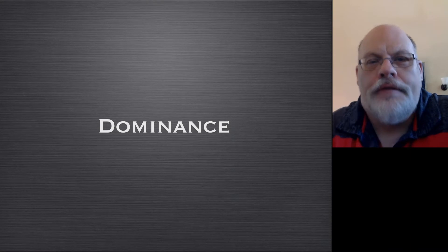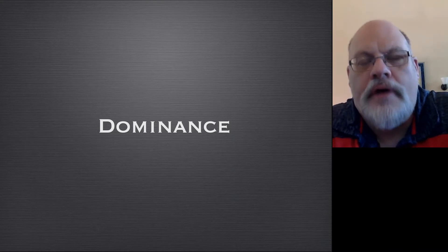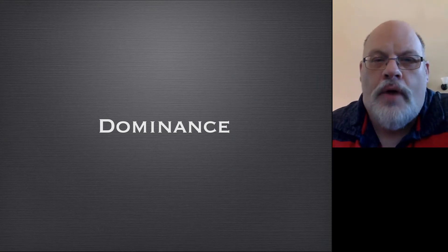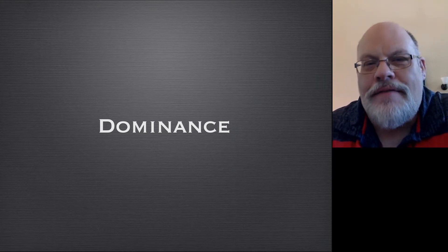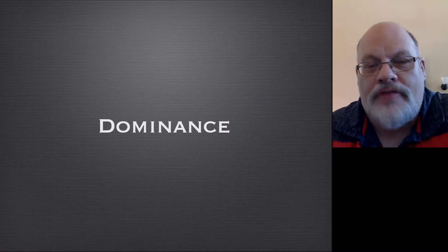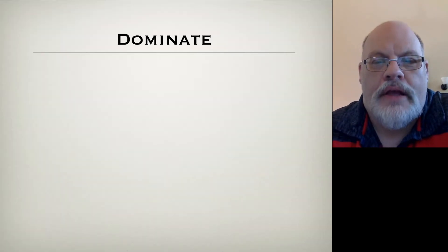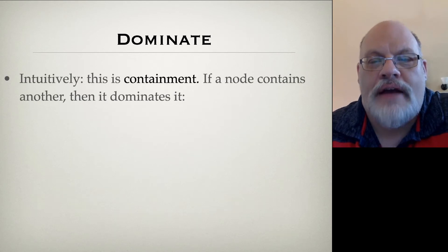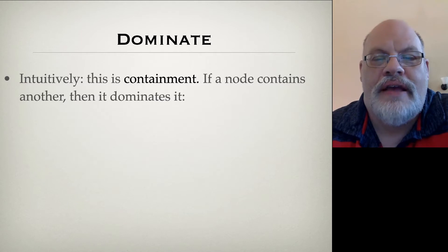The first relation we're going to talk about is called dominance. This is the up-down relationship in trees. It's the one that's connected via the branch lines. Intuitively, dominance is a kind of containment. If one node contains another, then it dominates it.